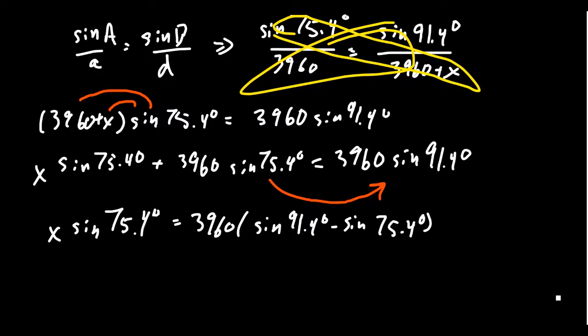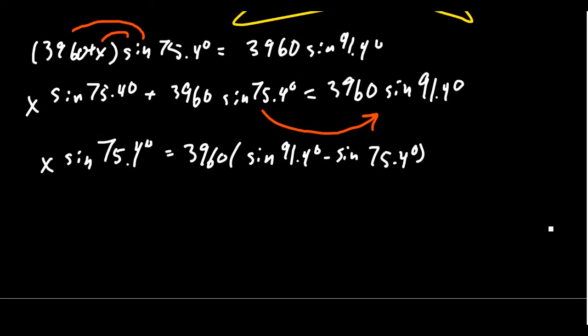I'm going to delay approximation until the very end to avoid rounding errors. So on the right-hand side, we get the 3,960 sine of 91.4 degrees. We want to move this friend to the other side of the equation. We can do that by a subtraction. And so we get X times sine of 75.4 degrees. This is equal to, on the right-hand side, everything's divisible by the 3,960. So I'm actually going to factor that out, 3,960, and then we get sine of 91.4 degrees minus sine of 75.4 degrees.